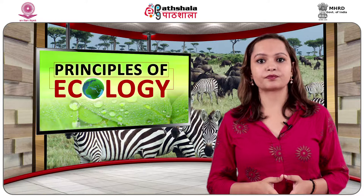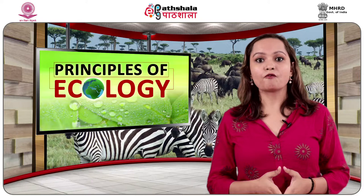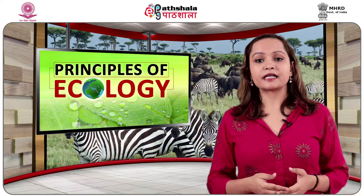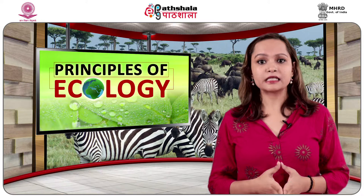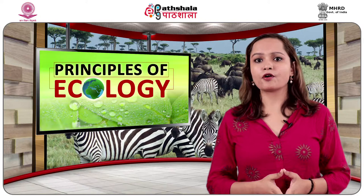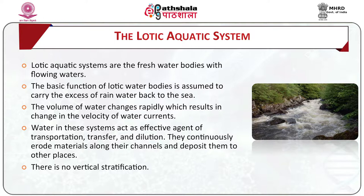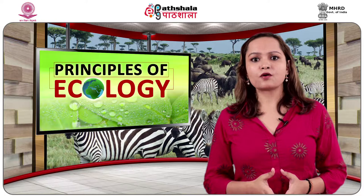Now we come to the lotic aquatic system. Lotic aquatic systems are freshwater bodies with flowing waters; water in a lotic system is in a state of constant motion. Rivers and streams are the most common examples. Typically lotic aquatic systems have the following properties: the flow of water is continuous and unidirectional; the volume of water changes rapidly, resulting in changes in the velocity of water currents; there is also a wide range of fluctuation in water level. Water in these systems acts as an effective agent of transportation, transfer and distribution. They continuously erode material along their channels and deposit it elsewhere. There is no vertical stratification or thorough mixing of contents. The physico-chemical status of water quality is in a state of perpetual change.